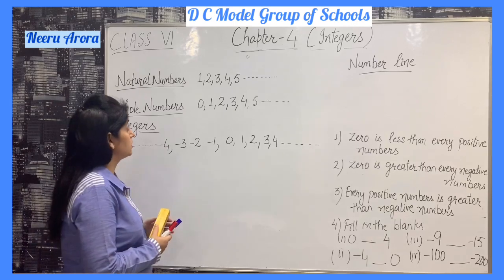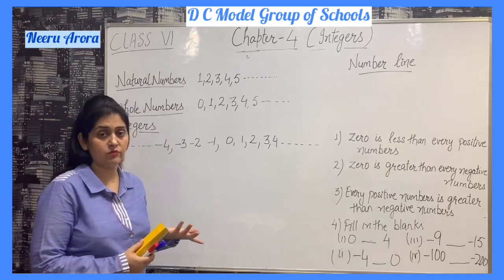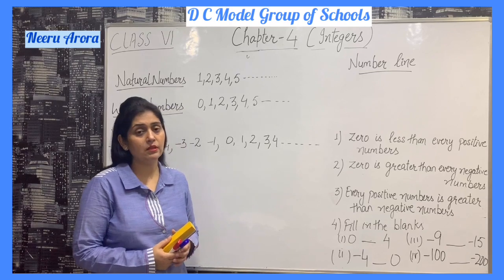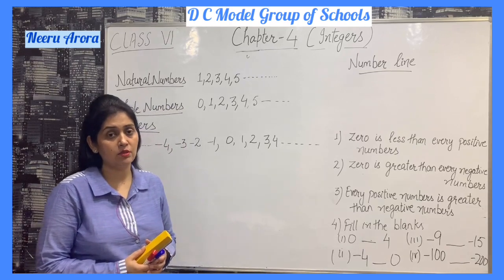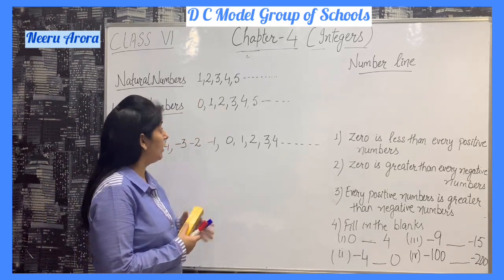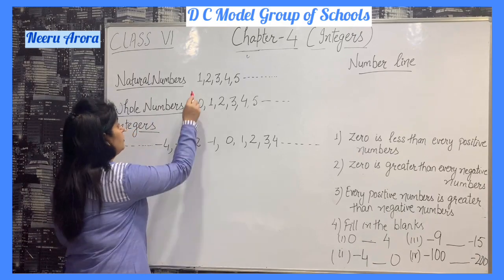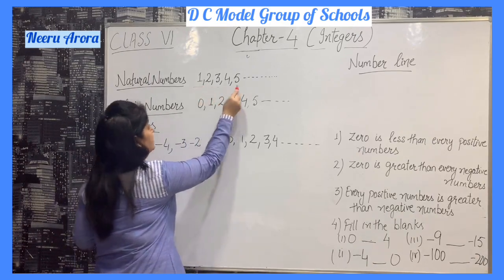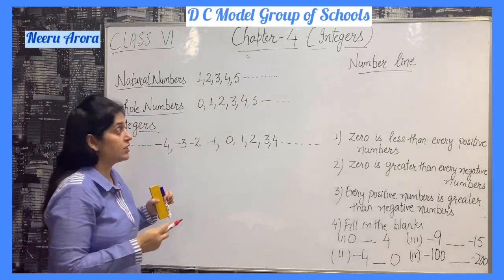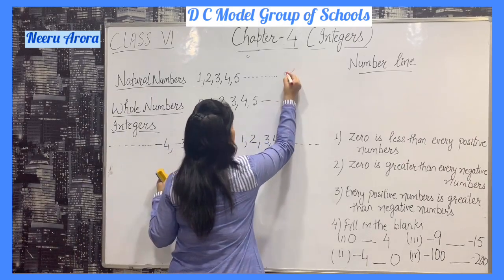What are natural numbers? All counting numbers are known as natural numbers. Natural numbers begin from 1, 2, and so on. It is endless — you can say it goes up to infinity.